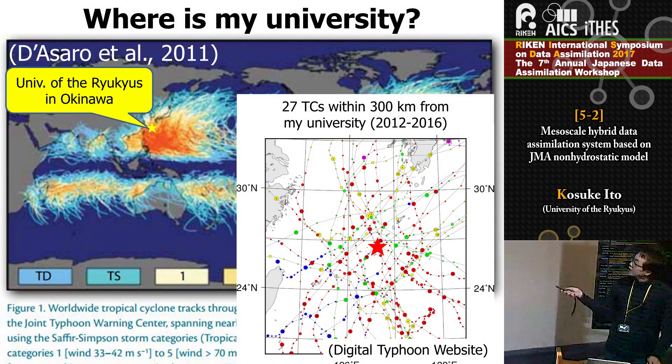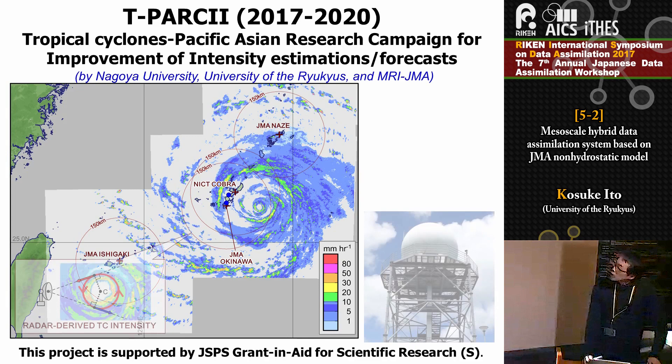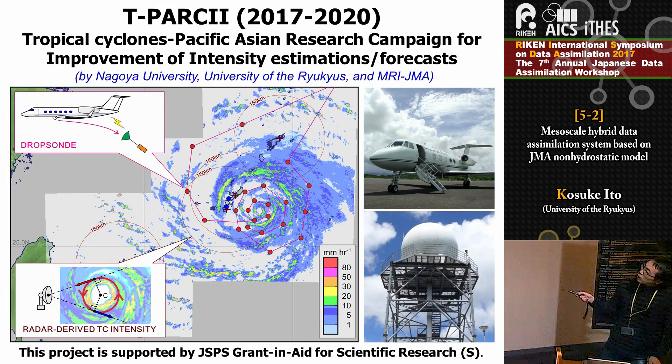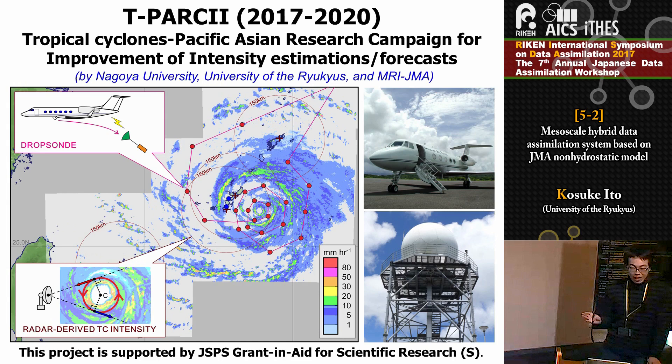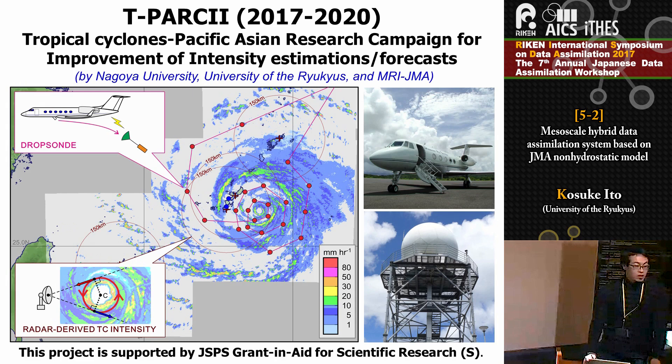We are usually hit by many tropical cyclones. Only in the last five years, we got 27 tropical cyclones approaching. So it's very good to announce we will have aircraft observations around tropical cyclones. The Tropical Cyclone Pacific Asian Research Campaign for Improvement of Intensity Estimation and Forecast project will be launched this summer as a four-year project. Due to budget limitations, we may have flights just one or two times a year, but we hope to have good collaborations. We are also planning to have targeted observations aimed at improving tropical cyclone intensity.